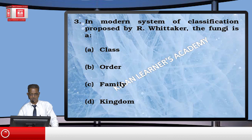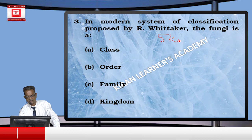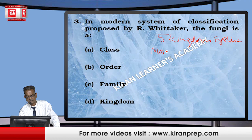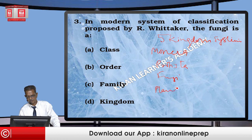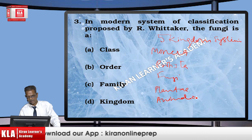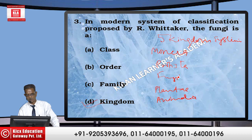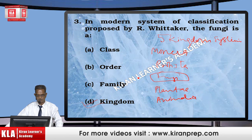Next: in the modern system of classification. The modern system is the five-kingdom system, which includes Monera, Protista, Fungi, Plantae, and Animalia. The question states: in the modern system of classification proposed by Whittaker, fungi is naturally a kingdom — it is the third kingdom in Whittaker's classification. So the correct option is Kingdom Fungi.